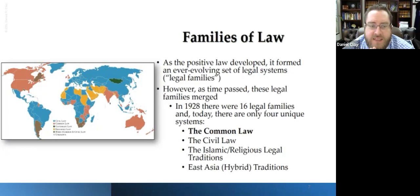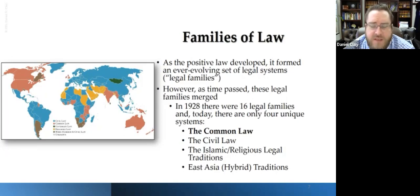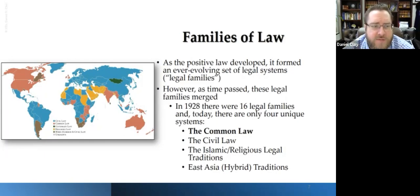The four systems we see today: first, we have common law, which is the American system. It's based upon precedent and court cases. We have statutes, but courts interpret the statutes, give them meaning, fill in the blanks, and apply them — that's common law. And as you can see from the map, the United States, Canada, Australia, India, and parts of Africa all have common law systems shown in red.